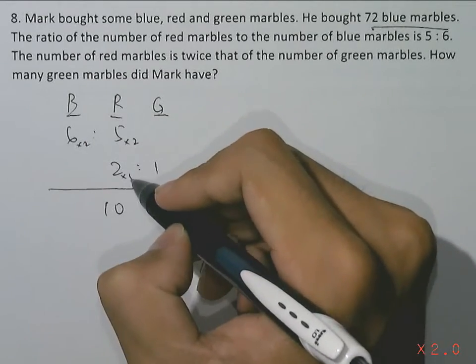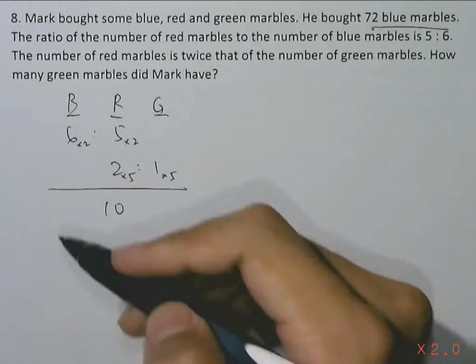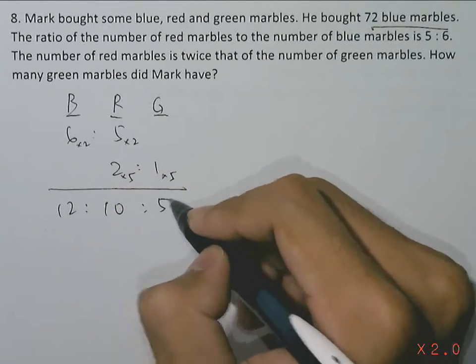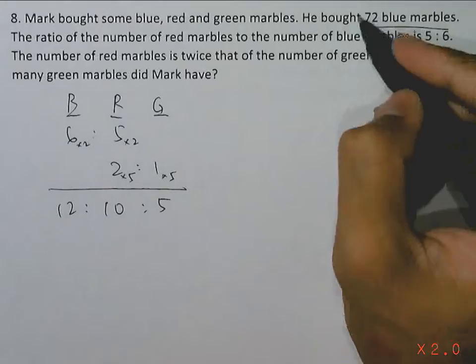While the lower ratio has to multiply by 5. So 6 times 2 will give us 12 for blue, and the green will have 1 times 5, which is 5. So we have 72 blue marbles.